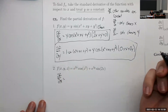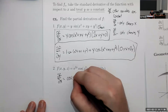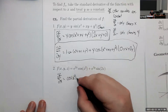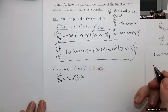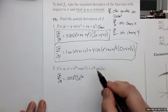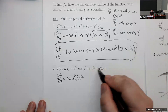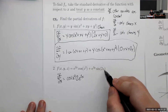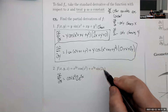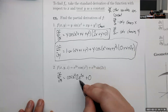Let's do the three partial derivatives. For partial f partial x: we have e^(2x)·cos(z²) — cos(z²) has no x's so it's a constant. The derivative of e^(2x) is 2e^(2x). The other term has no x's whatsoever, so everything in it is some constant, and the derivative of a constant is zero. Result: cos(z²)·2e^(2x).